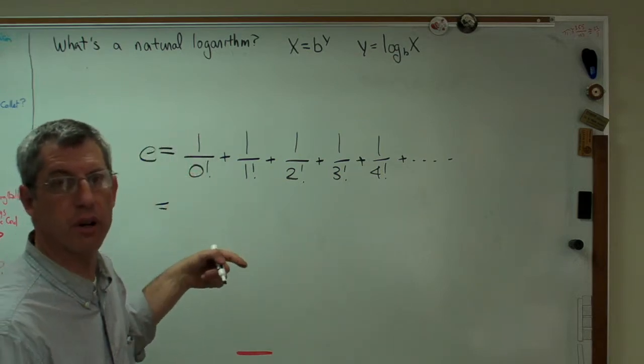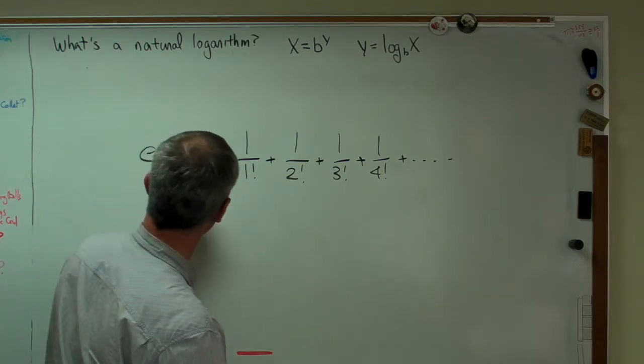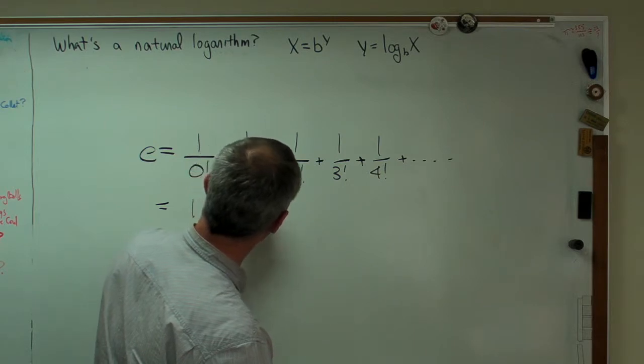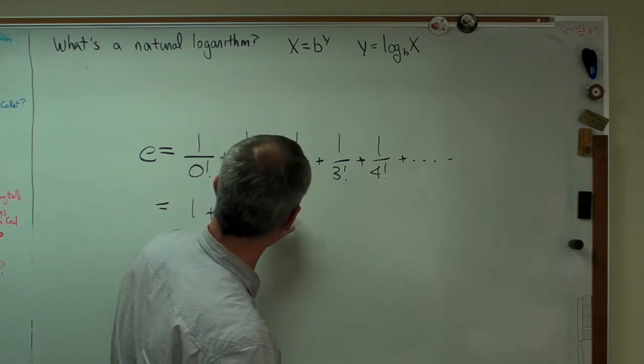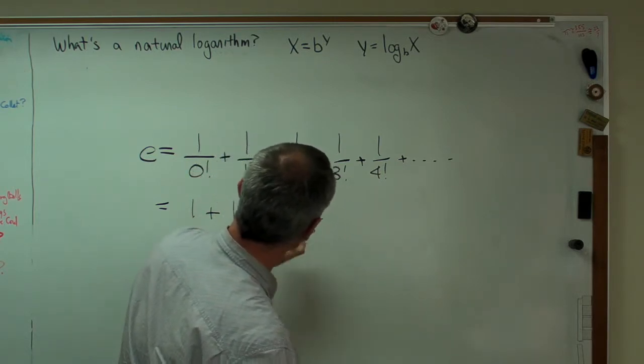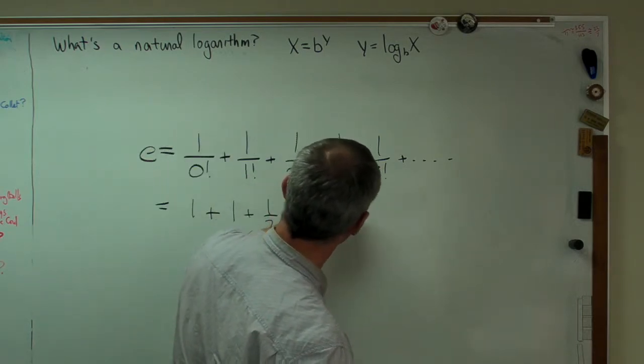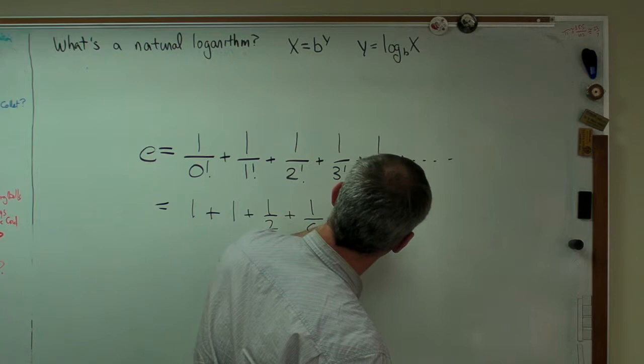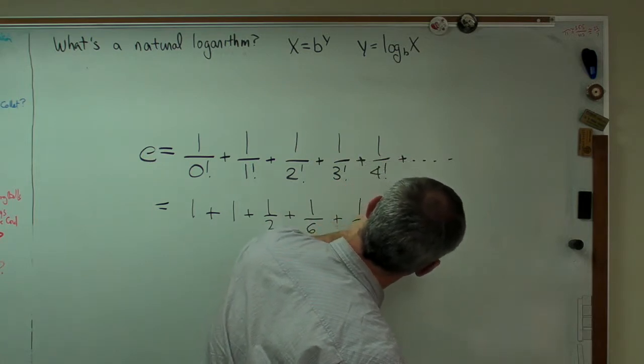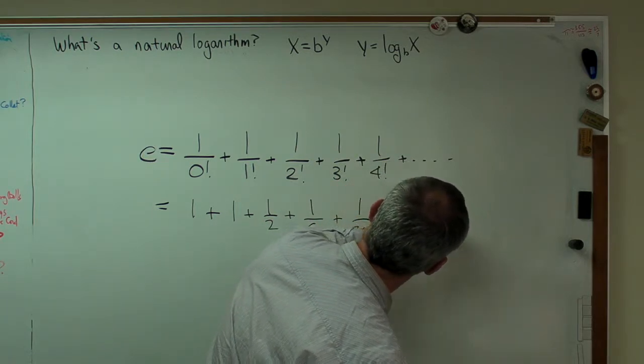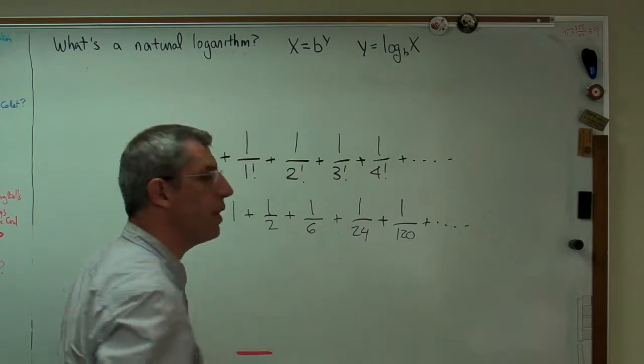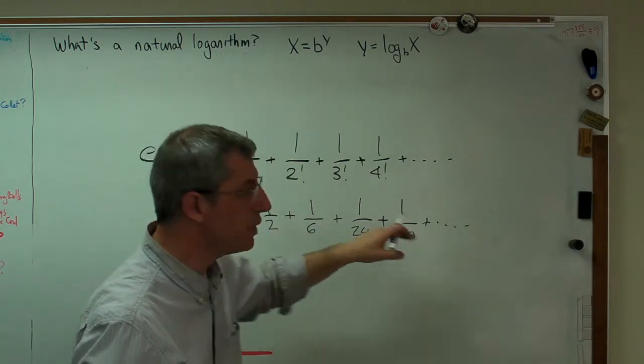The factorial of 0 is 1, so that's 1 plus 1 plus 1 half. Now, the factorial of 3 is 1 sixth, because it's 3 times 2. 6 times 4, that's going to be 24 plus, I believe the next one is 120. That's 5 factorial. Check me on that.